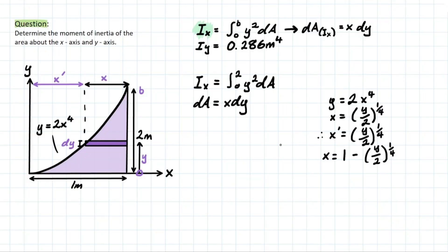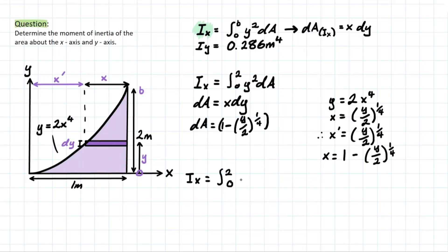Now we can plug dA back into our formula. So ix = ∫₀² y² · [1 − (y/2)^(1/4)] dy. We distribute and solve this using integration, which we learned in Calculus 1 and 2. I'll skip ahead through the algebra — you can follow along with my solution to make sure no errors were made.